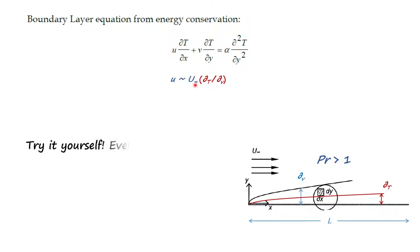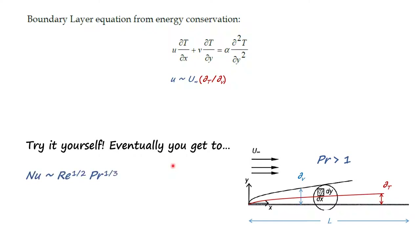I'll leave this as an exercise: do the scale analysis, put T_s − T_∞ in for ΔT, use the modified u velocity, apply continuity to find v, and work through it. Here's what you're going to get: Nu scales with Re^(1/2) × Pr^(1/3). Or for an actual number: Nu = constant × Re^(1/2) × Pr^(1/3), where the constant comes from solving the equations properly or from experiment. If you look in your textbook for Nusselt number correlations for laminar flow over a flat plate, you'll find correlations that look exactly like this.